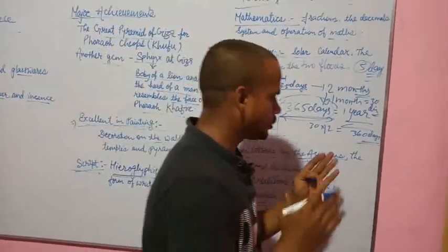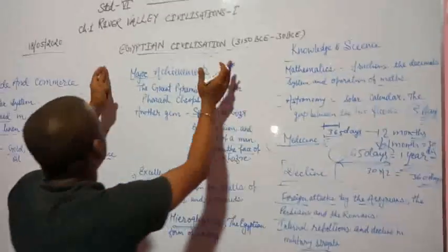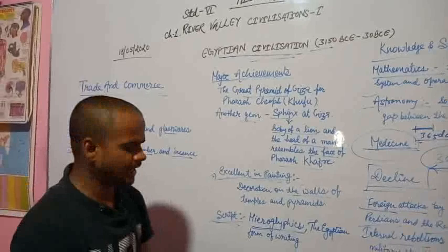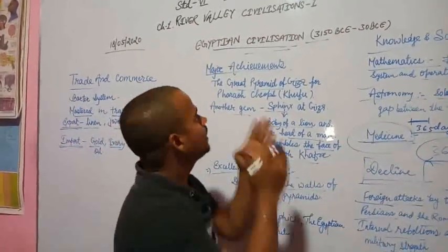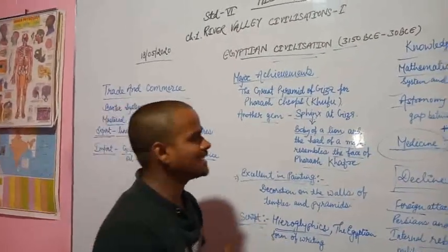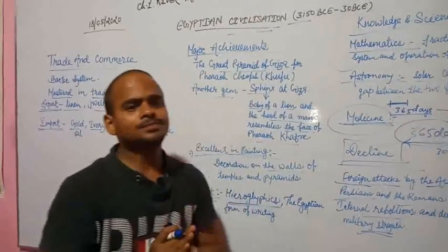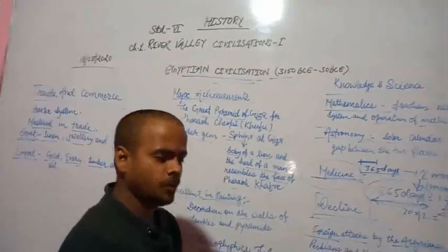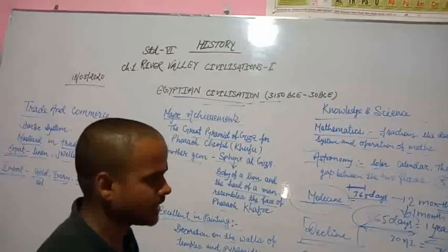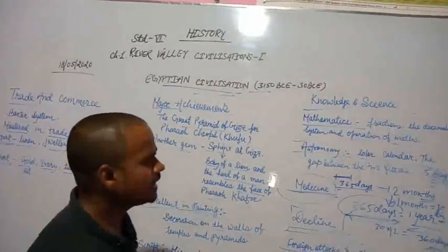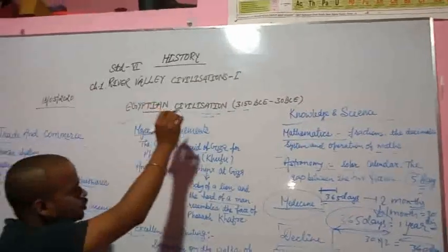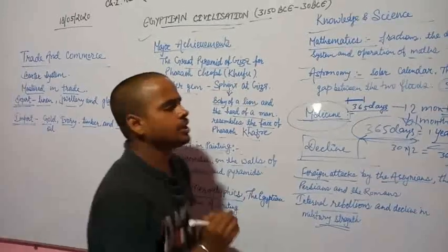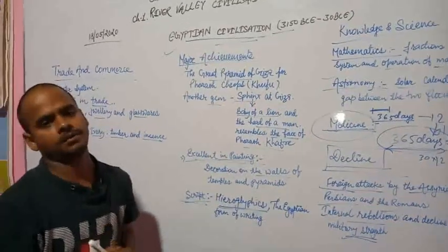This was the introduction to Egyptian civilization. We will study Chinese civilization in the next class. Till then continue with your Egyptian civilization, go through your book, read the chapter. If you have any questions you can leave your comment in my comment box. Thank you everyone.